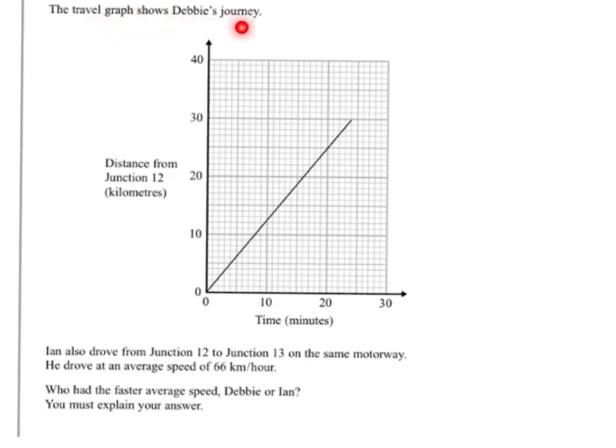We've got a travel graph showing Debbie's journey between junctions 12 and 13. Ian also drove from junction 12 to 13 on the same motorway, and he drove at an average speed of 66 kilometres per hour.